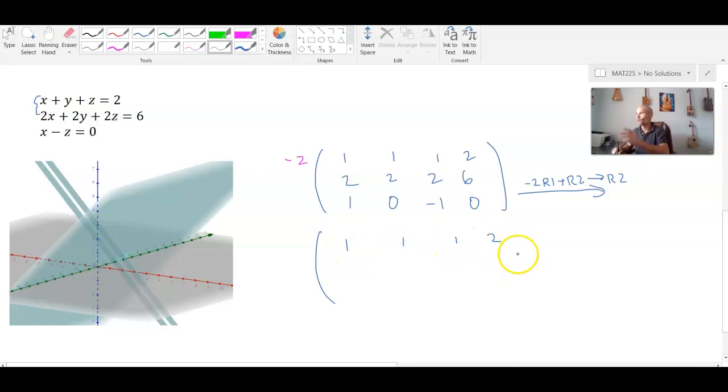1, 1, 1, 2, negative 2 times 1 plus 2 is 0, negative 2 times 1 plus 2 is 0, negative 2 times 1 plus 2 is 0, and negative 2 times 2 plus 6 is positive 2.